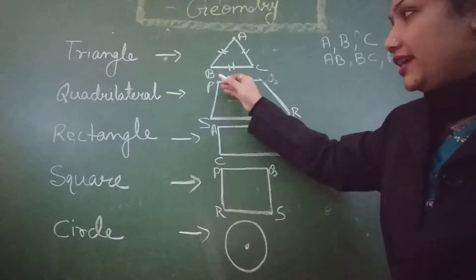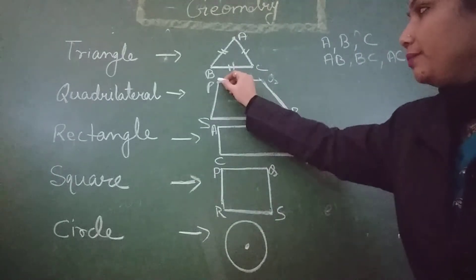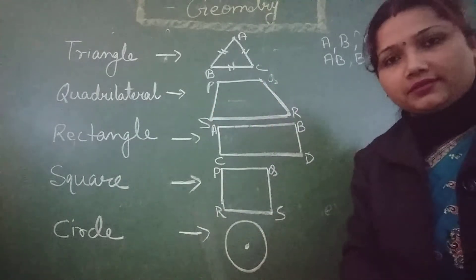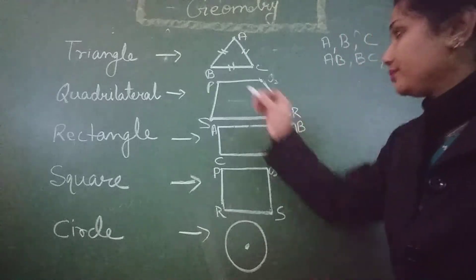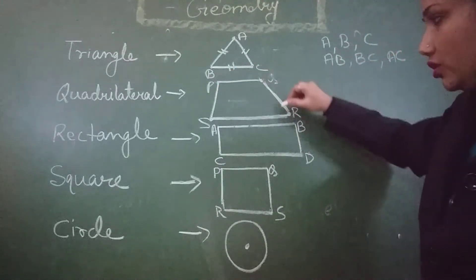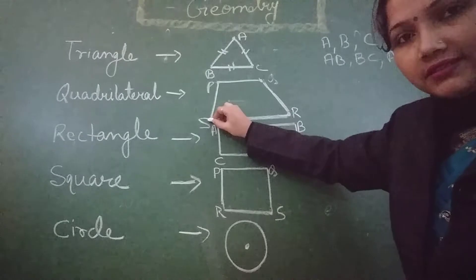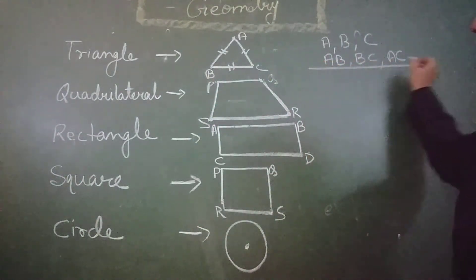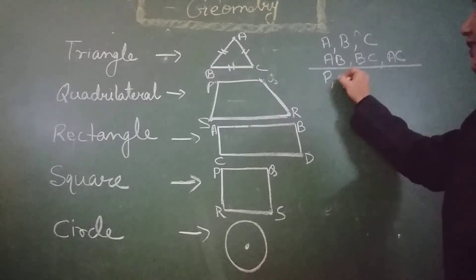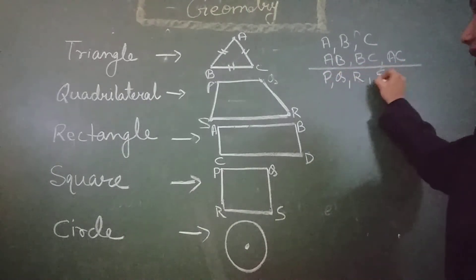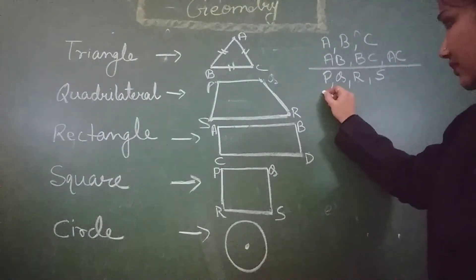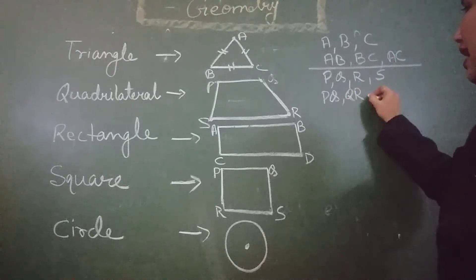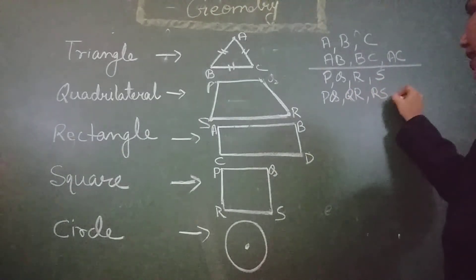P, Q, R and S. And sides are PQ, QR, RS and PS. Again, here I am writing. The vertices are P, Q, R and S. And sides are PQ, QR, RS and PS.